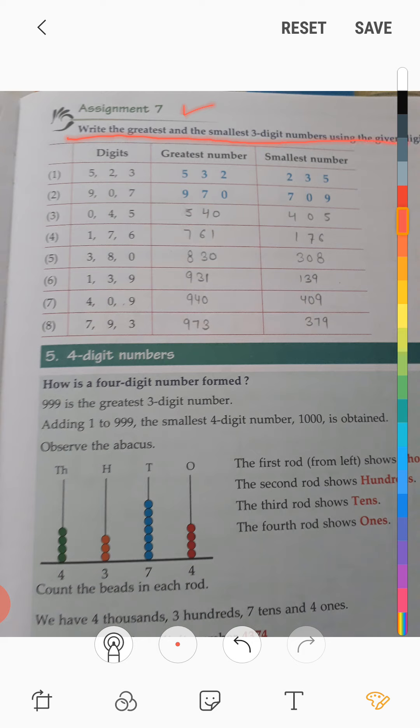So what we have to do is create the greatest number. To create the greatest number, we have to do descending order - biggest digits first. This is how we make the greatest number.